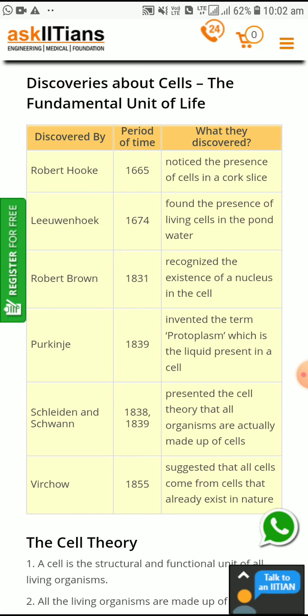Robert Brown in 1831 discovered and recognized the existence of a nucleus inside the cell. The nucleus, present inside every cell, was first observed by Robert Brown. Then Purkinje, in the year 1839, discovered protoplasm, which is the liquid present inside the cell.